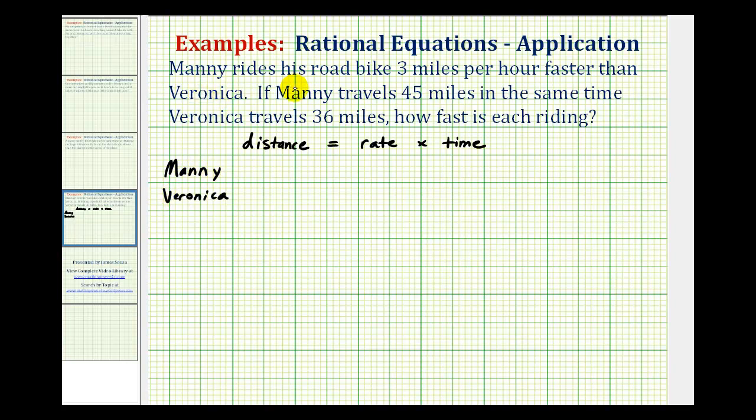The first sentence tells us that Manny rides his road bike three miles per hour faster. So we don't know the rate for either Manny or Veronica, but we know that Manny rides three miles per hour faster. So if we let Veronica's rate equal r,